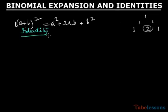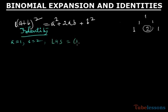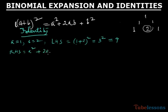Why is this called an identity? Because whatever the value of a and b you take, the left-hand side and right-hand side done separately will give the same value. Suppose a = 1 and b = 2. The LHS is (1+2)² = 3² = 9. The RHS contains 3 terms: a², 2ab, and b². The expansion of power 2 gives 3 terms.